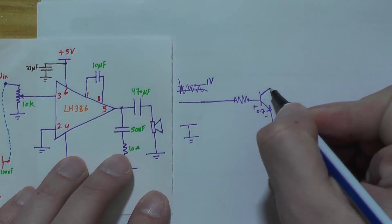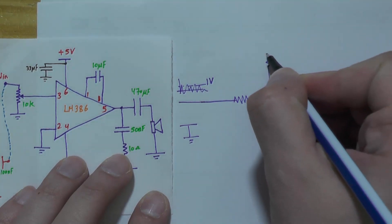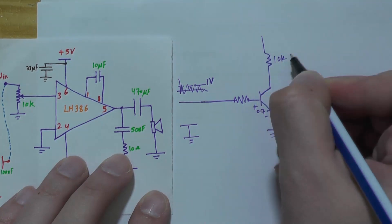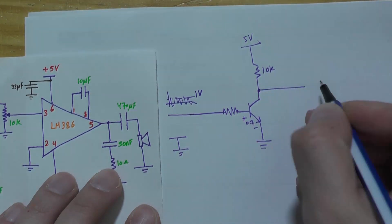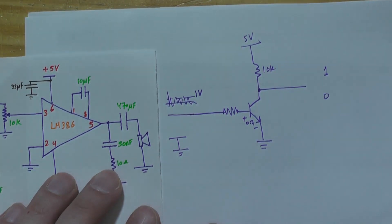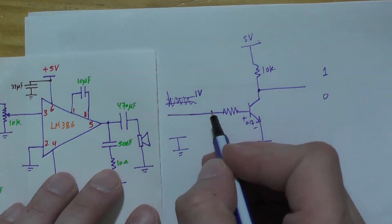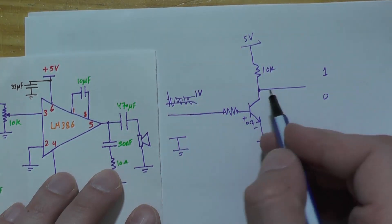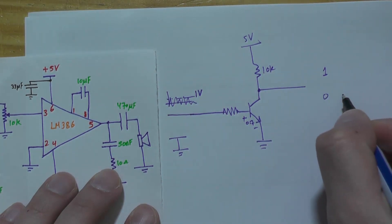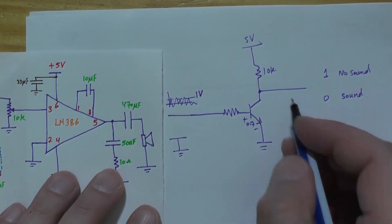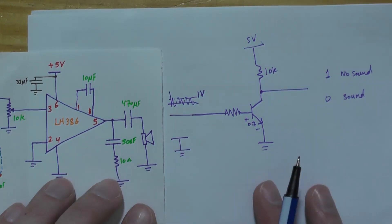If we complete the transistor circuit by 10 kilohm and five volt there, we will get on and off. If we have a sound which is one volt, it will make this transistor saturated and generate zero. So here there is sound and there is no sound. This is how we think about the expected outcome.